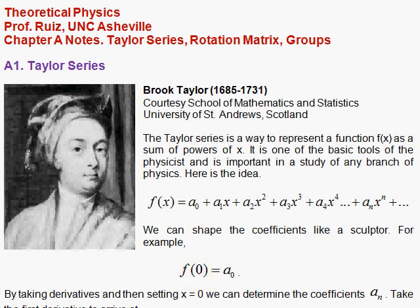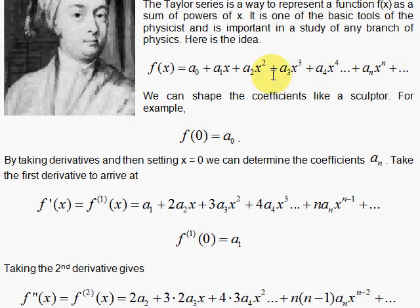And the trick is to take derivatives of the power series. For example, if we take the first derivative, the constant term vanishes, and we pull off an a₁. The derivative of x squared is 2x, so we have then the 2x with the a₂.